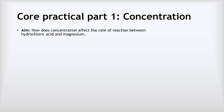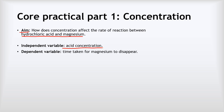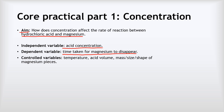This leads us on to the core practical. On the Edexcel GCSE course, there are three parts to the core practical. The first was investigating the effect of concentration — specifically, how does the concentration affect the rate of reaction between hydrochloric acid and magnesium? In this experiment, the independent variable was the concentration of the acid, and the dependent variable was the time it took for the magnesium to disappear. The controlled variables — the ones we didn't change — were the temperature, the acid volume, and the mass, size and shape of the magnesium pieces.